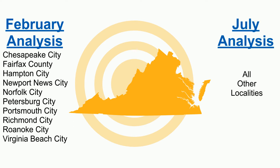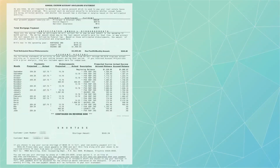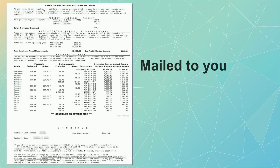Regardless of when your escrow account is analyzed, Virginia Housing will always provide you with a summary of the results. The annual escrow disclosure statement is mailed to you in the same month your analysis is conducted.